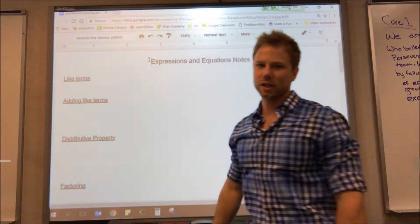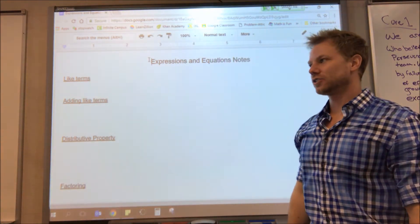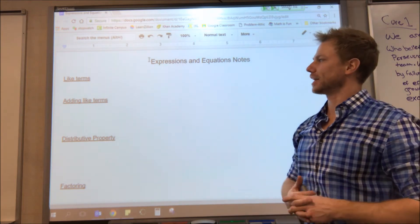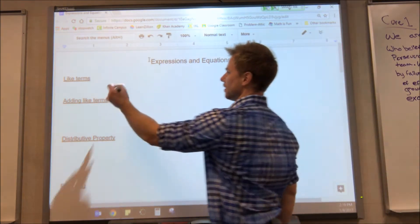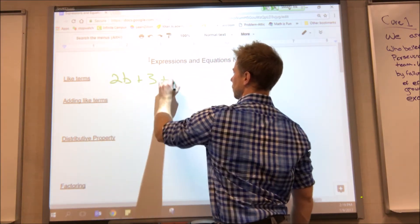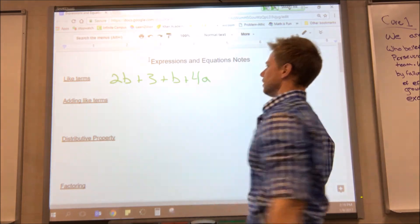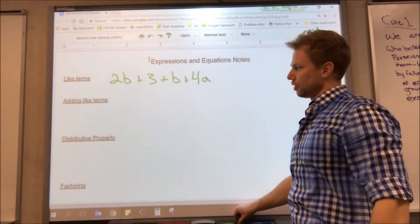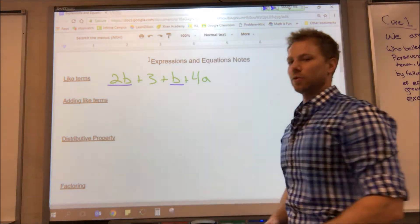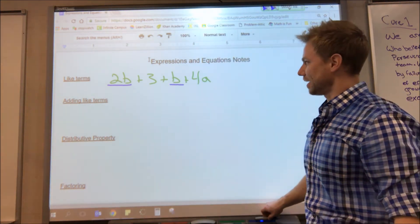We need to review what like terms are. Like terms are terms that can be added together or subtracted. For example, if I have the expression 2b plus 3 plus b plus 4a, I have like terms right here and here. Since they both have a b, they can be added together.